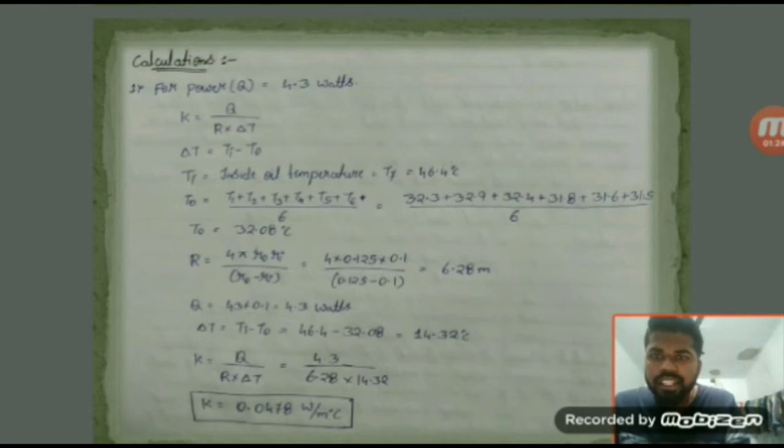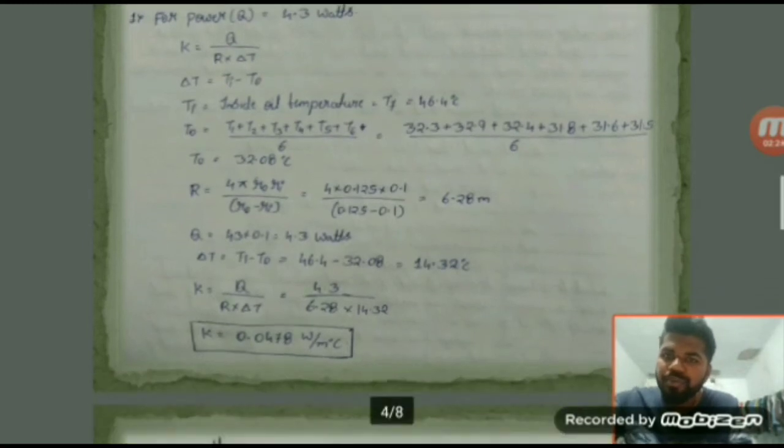Delta T is given by inside temperature minus outside temperature. R, the shape factor, is given by 4 pi outside radius into inside radius divided by outside radius minus inside radius. Here, the shape factor is 6.28 meters. Q, for the first calculation, is 43 volts and 0.1 ampere, which is 4.3 watts. Delta T, the temperature inlet minus temperature outlet, is 14.32 degrees centigrade. The coefficient of thermal conductivity K equals the power, which is 4.3 watts, divided by the shape factor 6.28 into the change in temperature 14.32. The thermal conductivity of the insulating material K equals 0.0478 watt per meter degree centigrade.